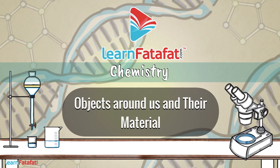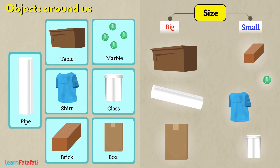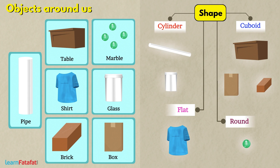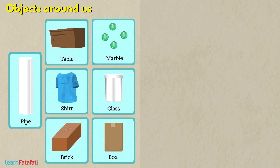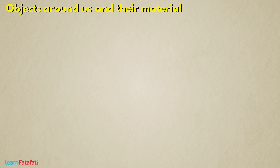There are various objects around us. They can be grouped in different ways based on properties such as size, shape, color, or their use. There is one more property with which we can classify objects — it is based on the material from which the object is formed.